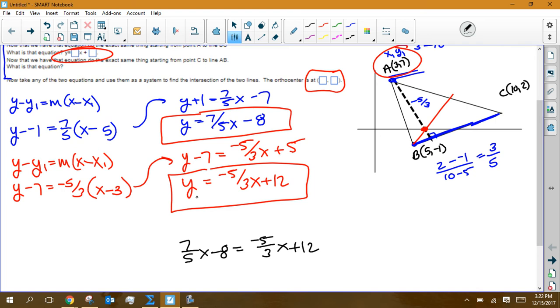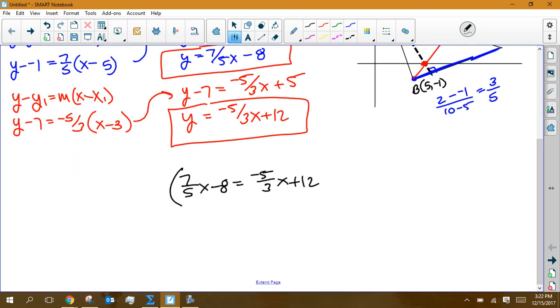I think it's a good idea to multiply everything by 15 here. I multiply everything by 15. Cancel. Cancel. Leaves me a 3 here. So 3 times 7 is 21. 15 times 8. Well, 15 times 10 would be 150. So 15 times 8 is going to be 30 less than that. So 120. So minus 120. Now 15 times this 3, they're going to cancel and leave me 5. So 5 now times negative 5 would be negative 25x.